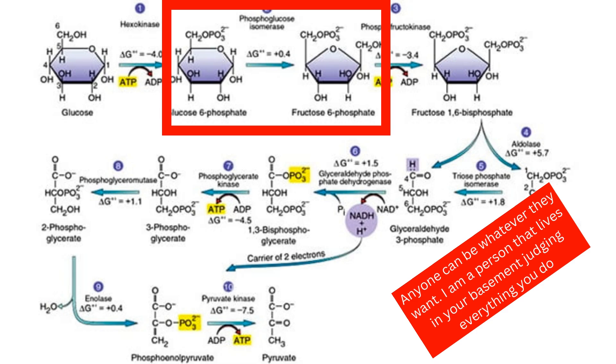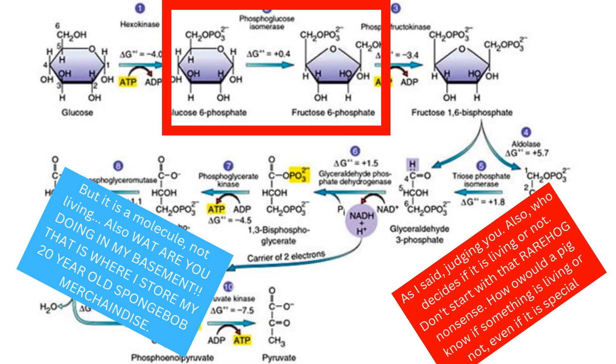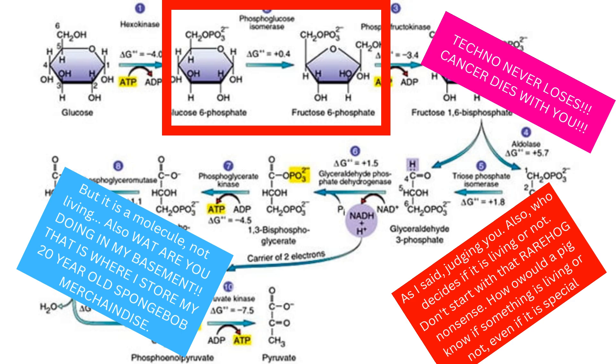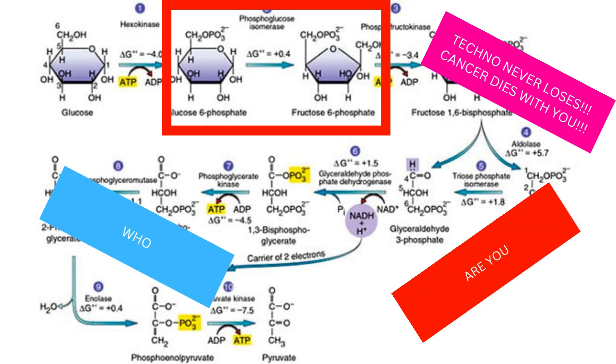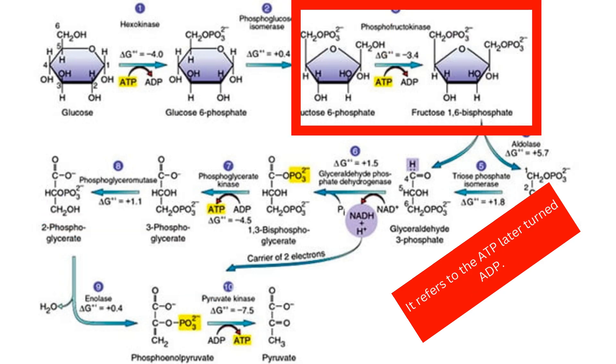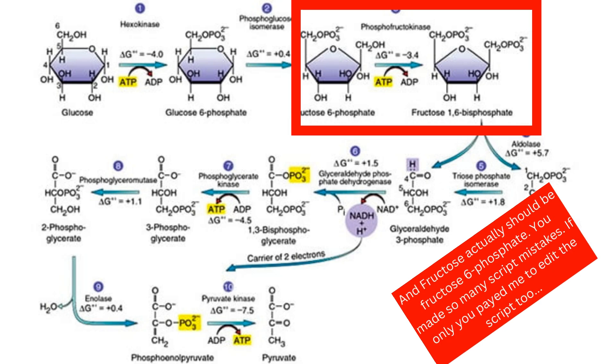Then what happens is odd. The glucose-6-phosphate does not really react with anything, it just changes its shape from a hexagon to a pentagon, becoming fructose-6-phosphate. This then reacts with another ATP to turn it into an ADP, and the fructose becomes fructose-1,6-biphosphate.